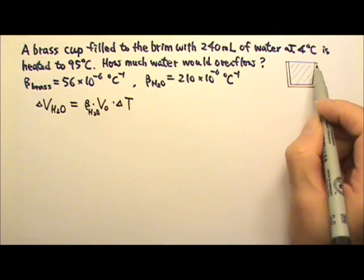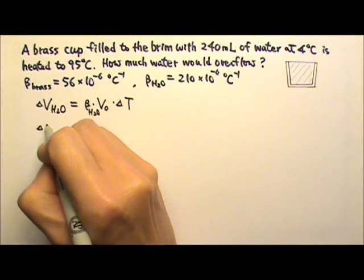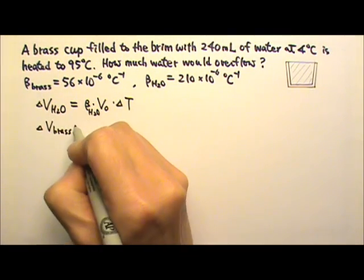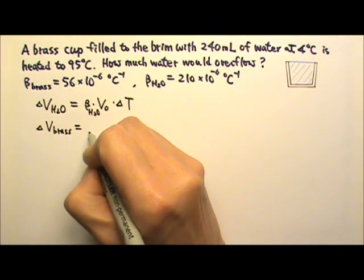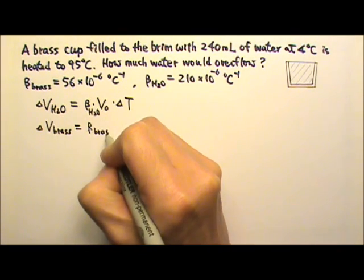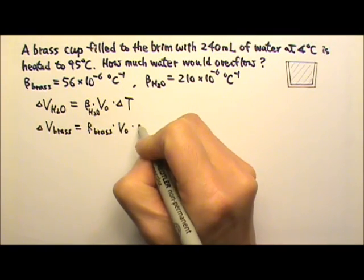And the brass cup is also heated, so the brass cup is also going to expand. The amount of volume change for the brass cup is beta of the brass times V₀ times delta T.